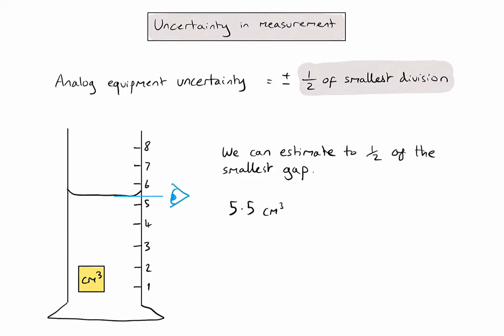So to work out the uncertainty for this value, I follow the convention of putting plus or minus half of the smallest division or gap between lines on my scale. So in this case, the smallest gap between lines is 1 centimetre cubed and half of 1 would be 0.5. So I'm going to add that to the end of my measurement, something like this. And this uncertainty tells me that my measurement is accurate within plus or minus 0.5 of the measurement that I've actually recorded.